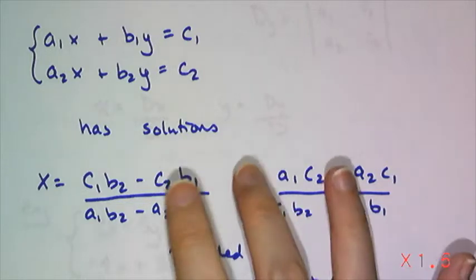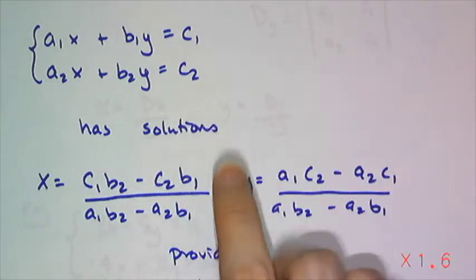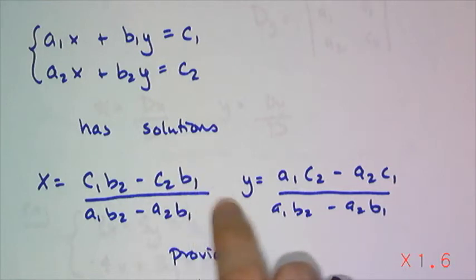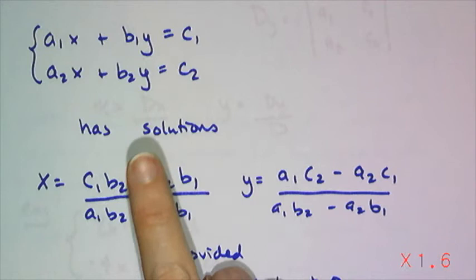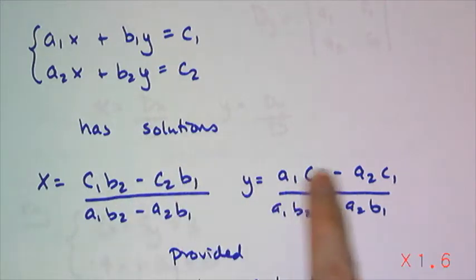Now these numbers should make you think, well hey, those kind of look like determinants. That one for sure on the bottom is the determinant of the coefficient matrix but what's with the c1 and the c2?